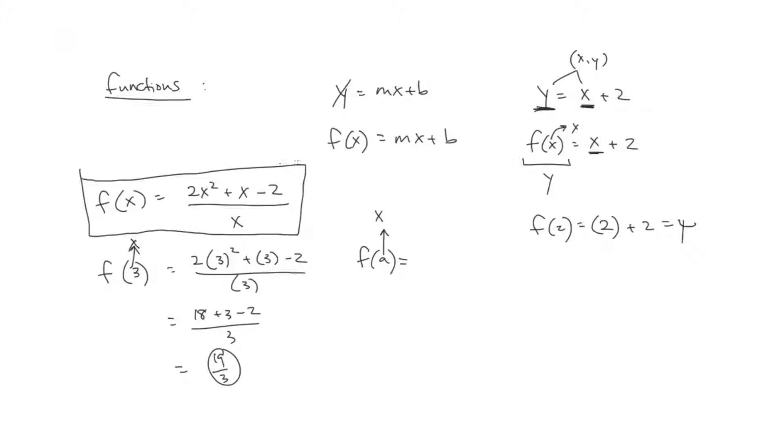So if we take the same equation and we're plugging in a for all the x's, we get 2a squared plus a minus 2 divided by a. So again, it doesn't really matter what letter this is. They could give us f of b or f of c or f of m, f of z. All of these, whatever's inside the parentheses is your new x value, which we plug in to this x, x, and x.